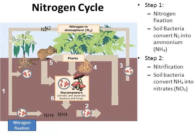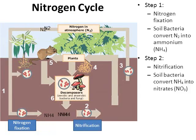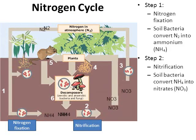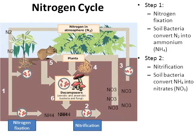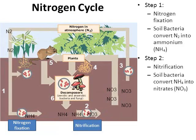Next comes step number two, which is a process called nitrification. Similar in name, however there's a bit of a difference. Nitrification still uses soil bacteria. Notice in area two of the animation, NH4 — which is the ammonium — is going to be converted into NO3, which are nitrates. This is a more usable form. So the purpose of nitrogen fixation and nitrification is to convert atmospheric nitrogen, which is not really usable, into more usable forms. That's the job of the bacteria in area number two, called nitrification.